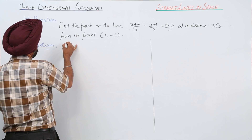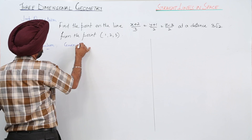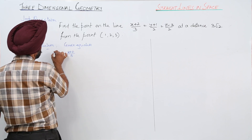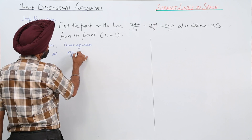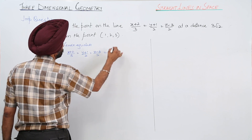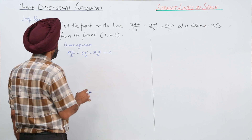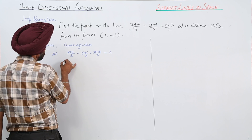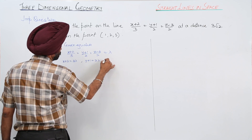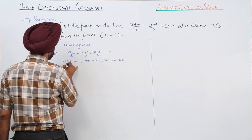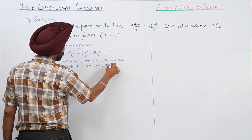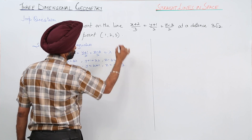Given equation: (x + 2)/3 = (y + 1)/2 = (z - 3)/2 = λ. This gives x + 2 = 3λ, y + 1 = 2λ, z - 3 = 2λ. So x = 3λ - 2, y = 2λ - 1, and z = 2λ + 3.